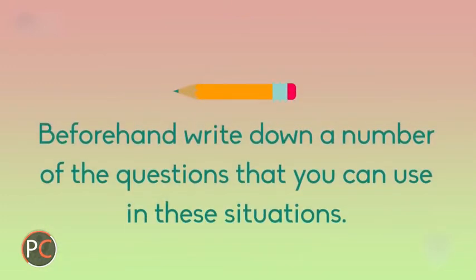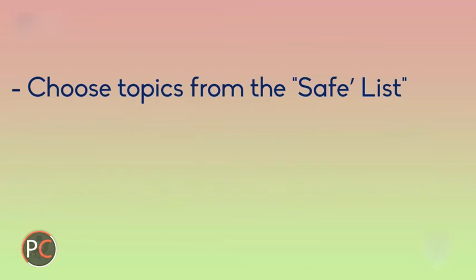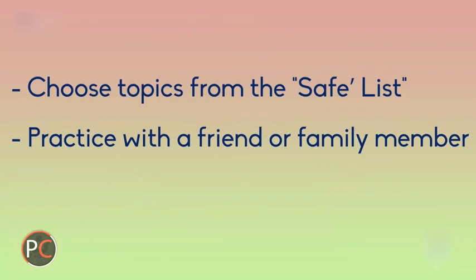Beforehand, write down a number of questions that you can use in these situations. Choose topics from the safe list we talked about earlier. Here are a couple of examples: 1. How was your weekend? Did you do anything fun or interesting? 2. The weather forecast looks very nice for this coming weekend — do you have any plans? 3. What restaurants would you recommend for lunch? These are just a few examples. Try these out a few times on a friend or a family member to see if they work and whether you need more practice. Select the ones you think work well and throw out the ones that don't.